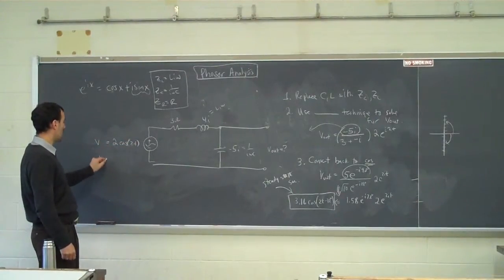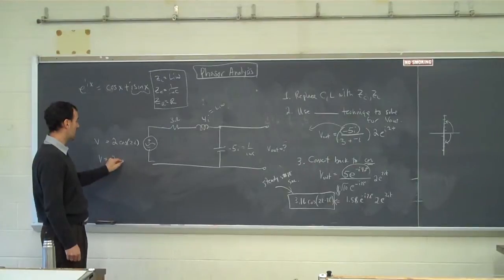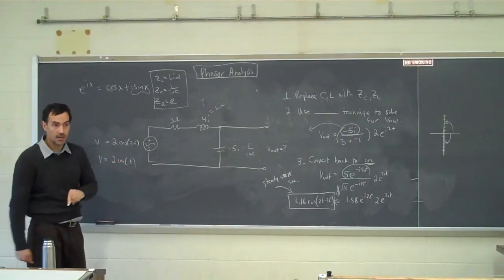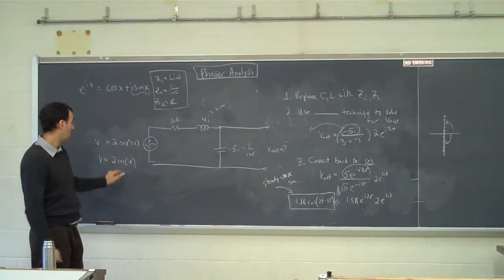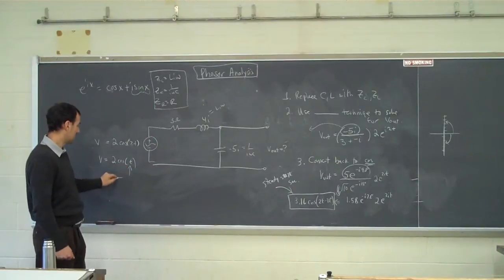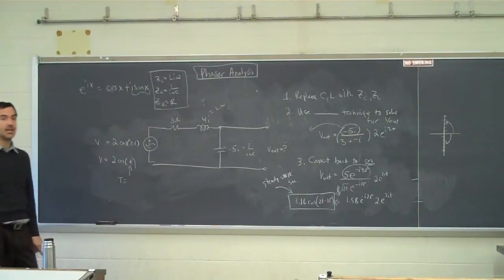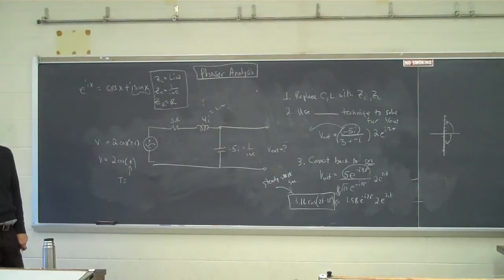Actually, better yet, let's just suppose that for a moment I have d equals 2 cosine t. What is the period of this cosine t? How much time does it take to repeat itself?